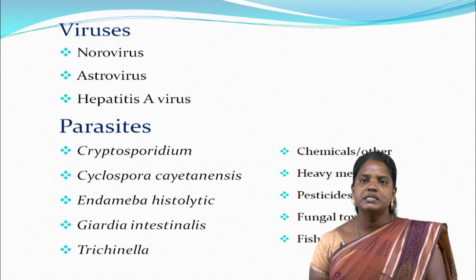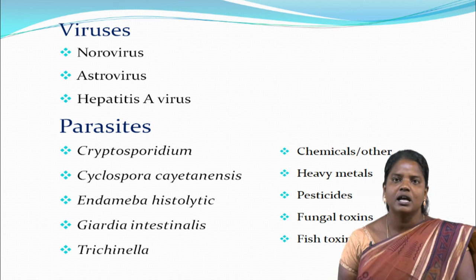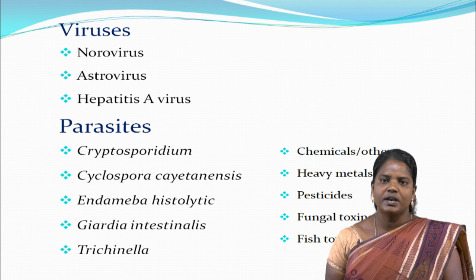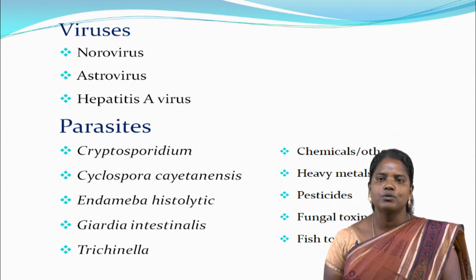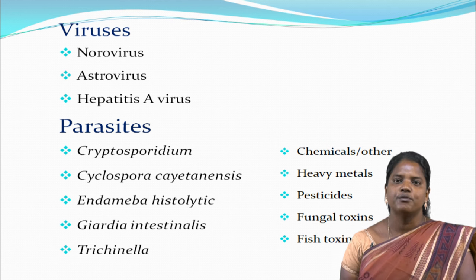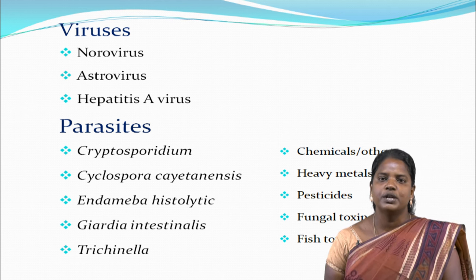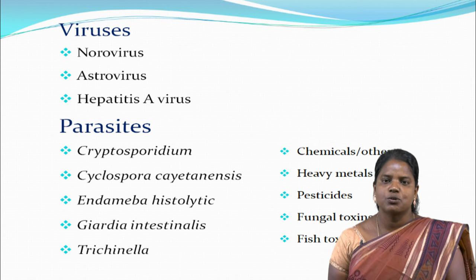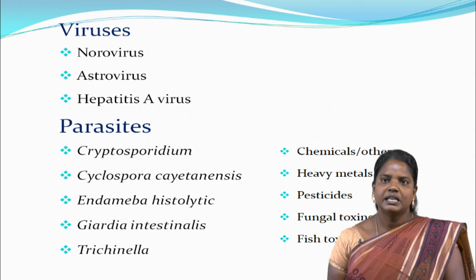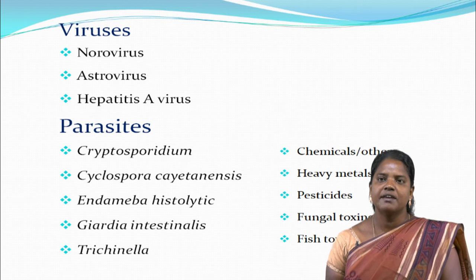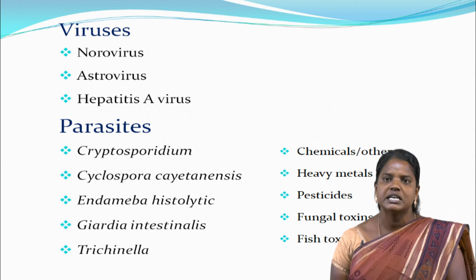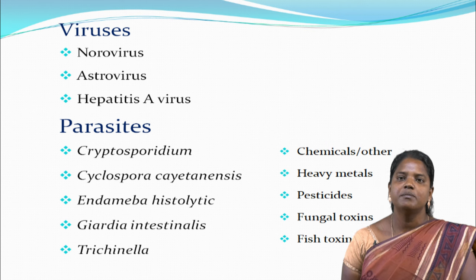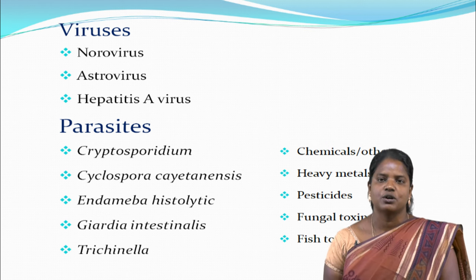Viral causative agents of foodborne diseases include Norovirus, Astrovirus, and Hepatitis A virus. Parasitic or protozoan causative agents include Cryptosporidium, Cyclospora, Entamoeba histolytica, Giardia intestinalis, and Trichinella. Chemical causative agents include heavy metals, pesticides, fungal toxins, and fish toxins used in agriculture such as insecticides.